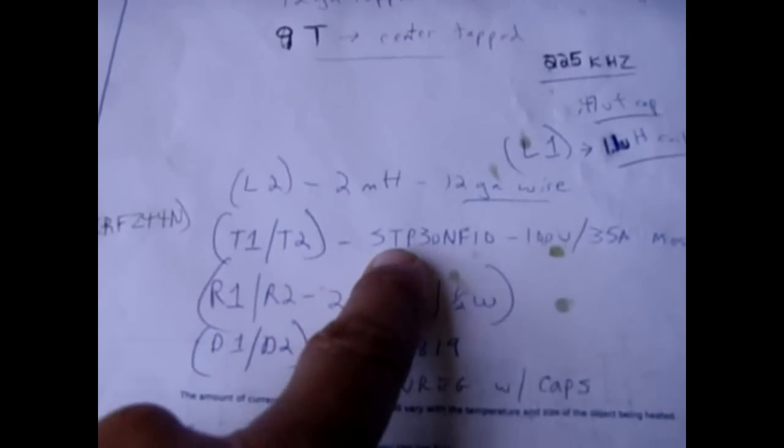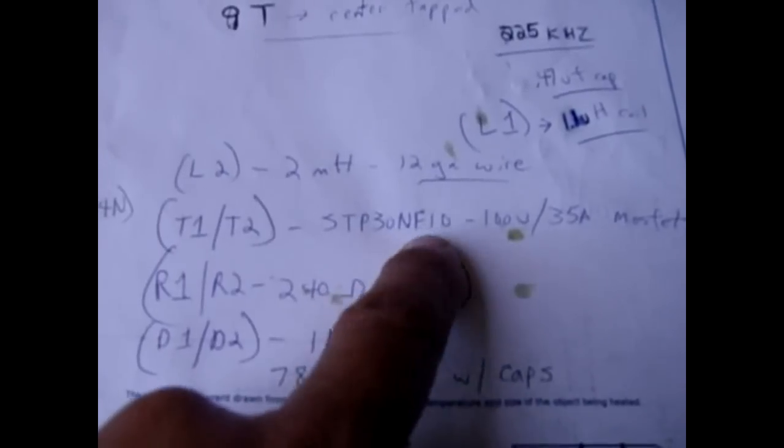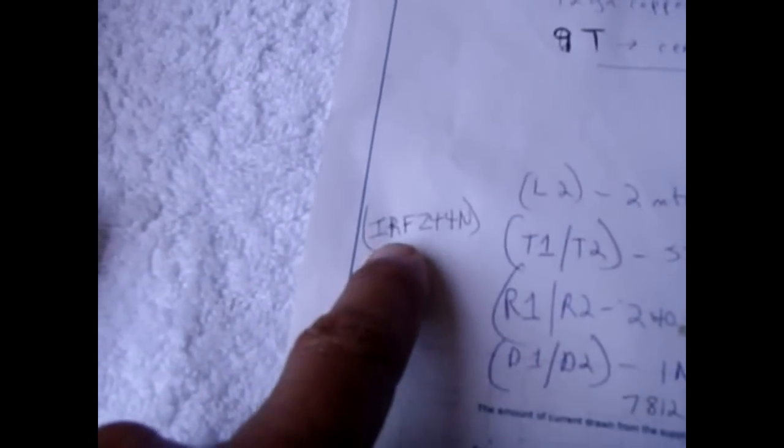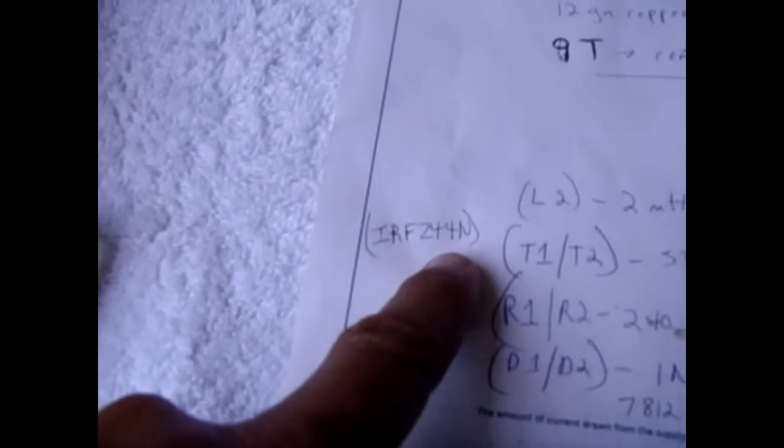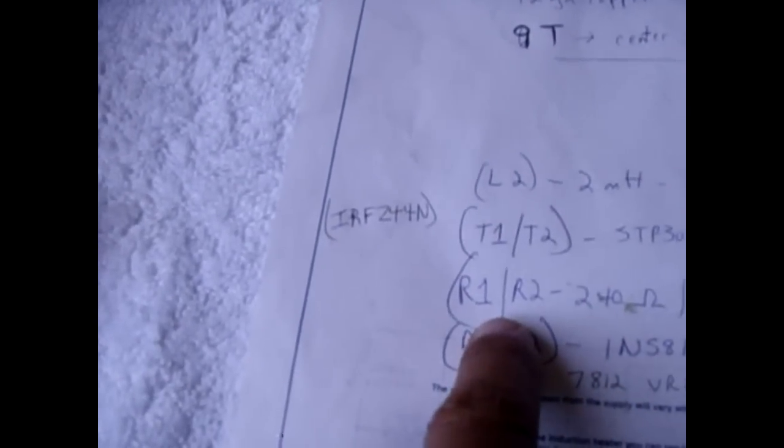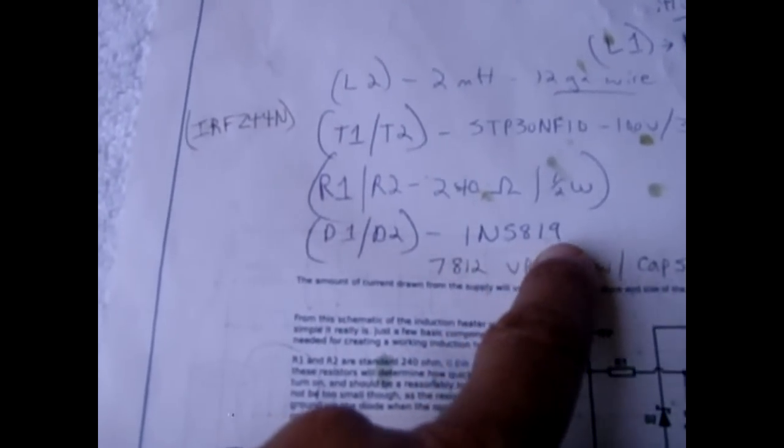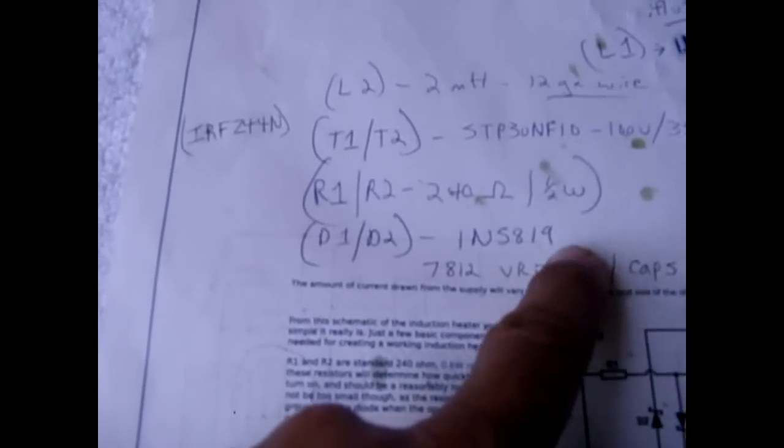Now the MOSFET is an STP30NF10, which is a 100 volt 35 amp. You could use higher rated ones than this. And all I had laying around was an IFRZ44N that works perfectly. It only gets warm or very warm. Doesn't get hot. Both your resistors are, I use not 240, I use 200 ohm half watt. You can go 200 ohm 1 watt if you want to keep them running cooler. Both diodes are the Schottky diodes, which is 1N5819s all the way up to 5822. They all work.